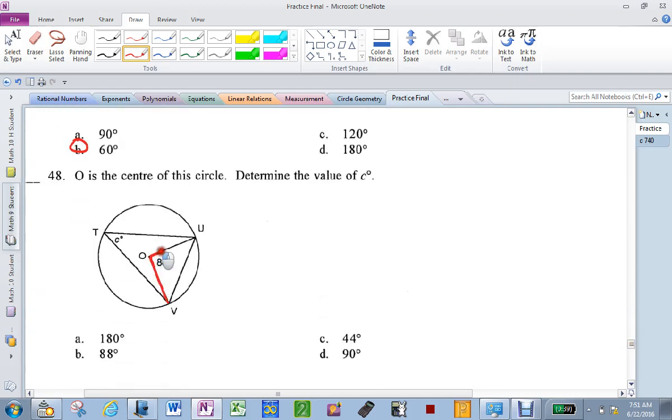Since that guy is a central angle and that guy's inscribed angle that comes from the same arc, that guy must be 88 divided by 2. 44.